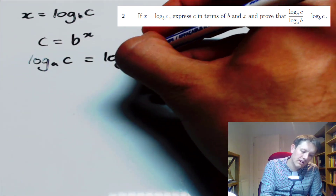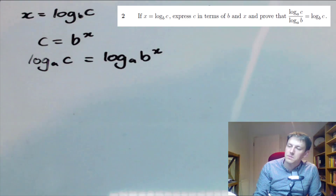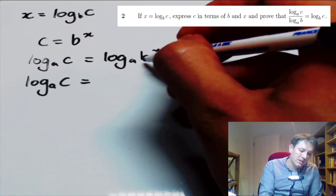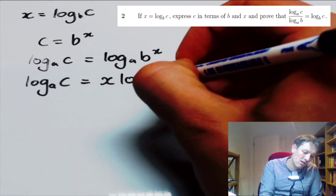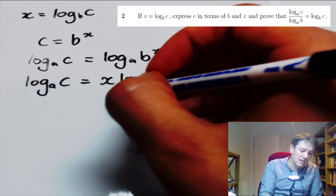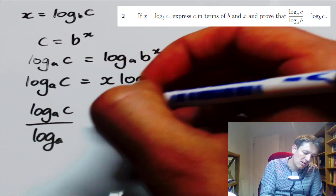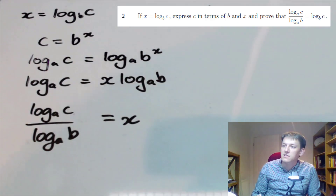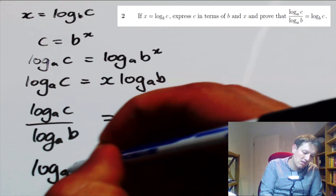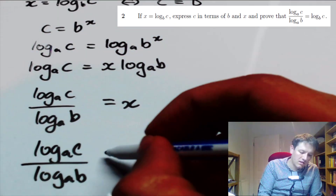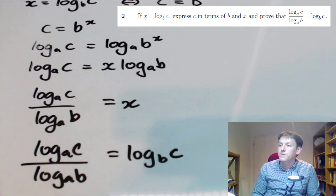On the right hand side, I get log to base a of b to the x. Using the rules of logarithms, I've got b to the power of x, so I can write this as x times log_a of b. That means log_a of c divided by log_a of b is equal to x. But if we look back, x is log base b of c, so replacing x with log base b of c gives us exactly the result we're trying to prove.